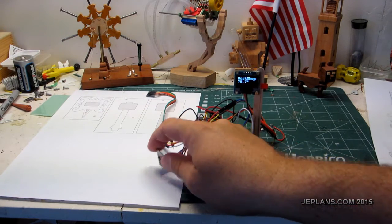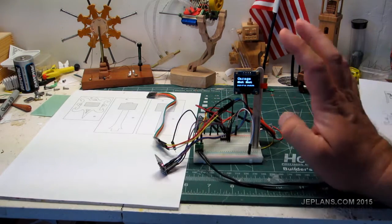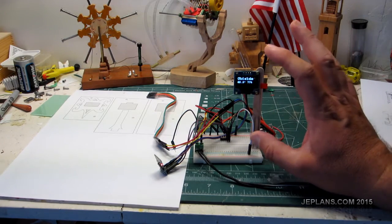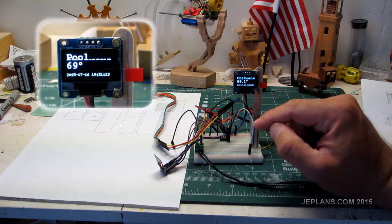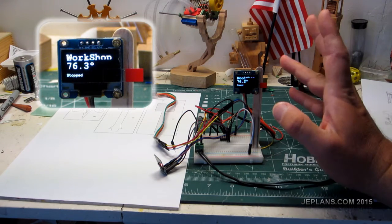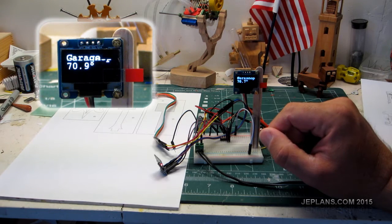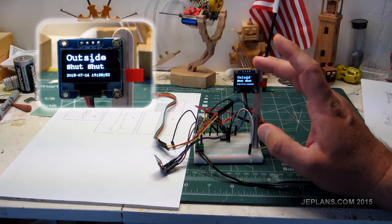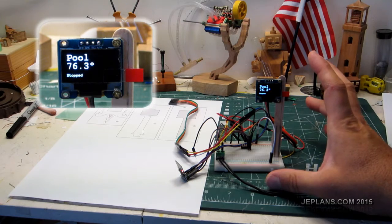Using this ESP8266 version 1 module and one of these small OLED displays, I've created a marquee that cycles through temperature inside a chicken coop, temperature of a pool, temperature in the workshop, whether our garage doors are shut, and outside temperature and humidity. But obviously, this is not very nice to look at.